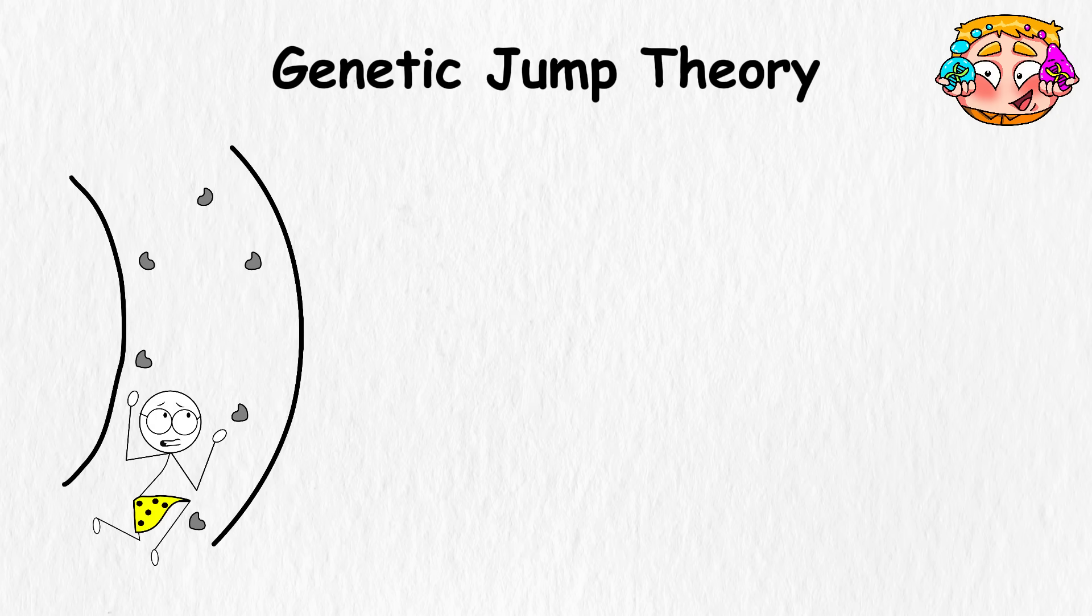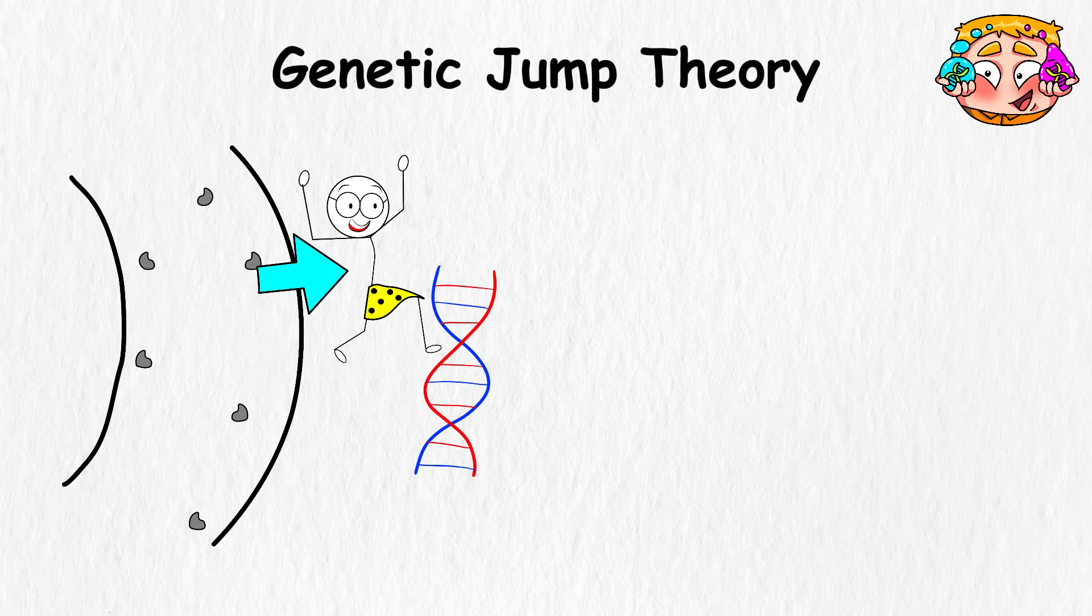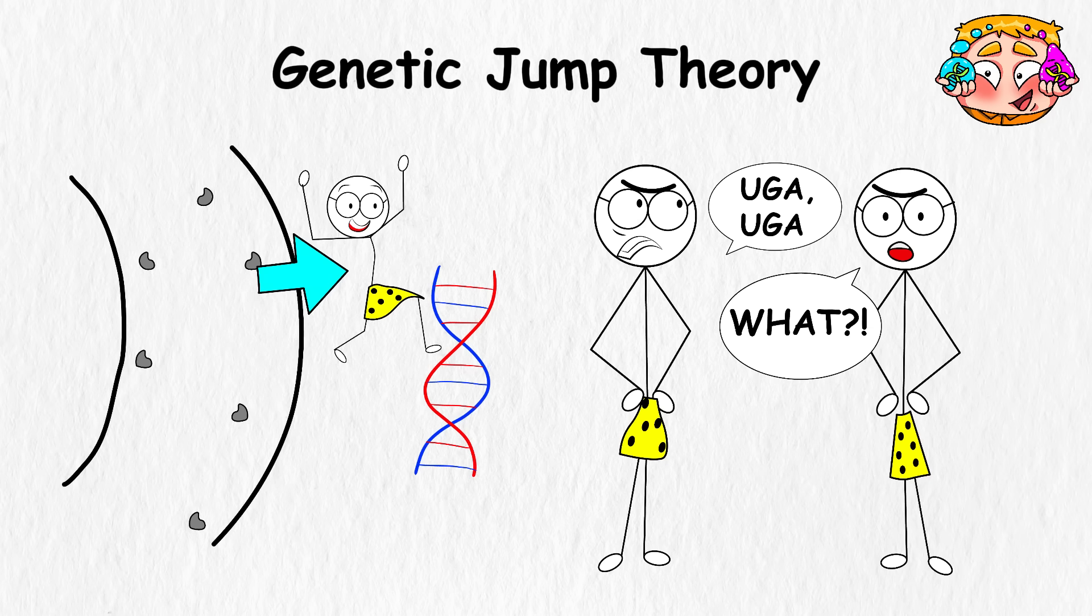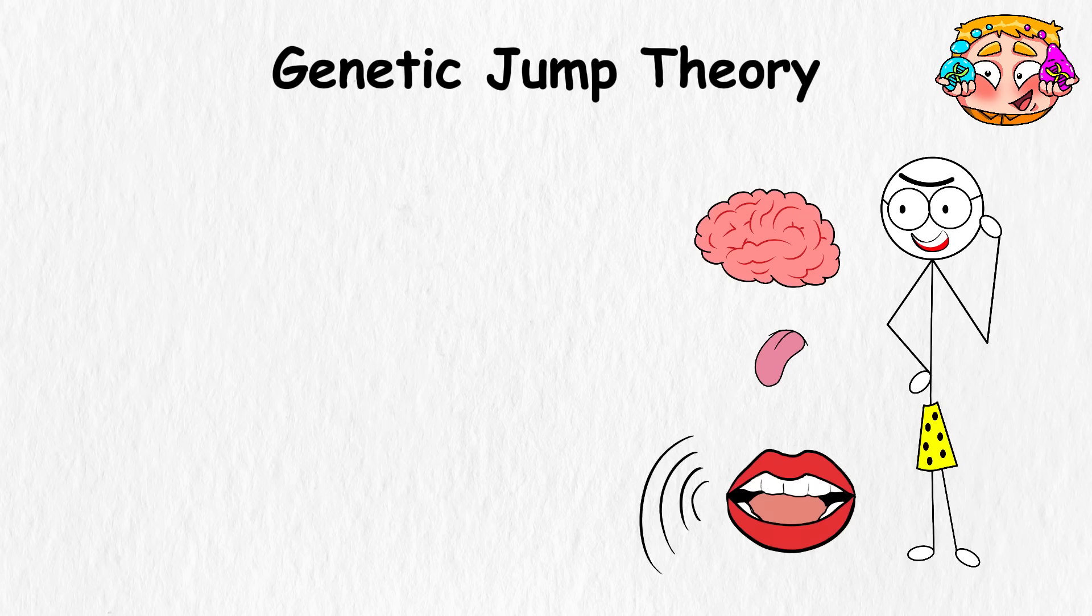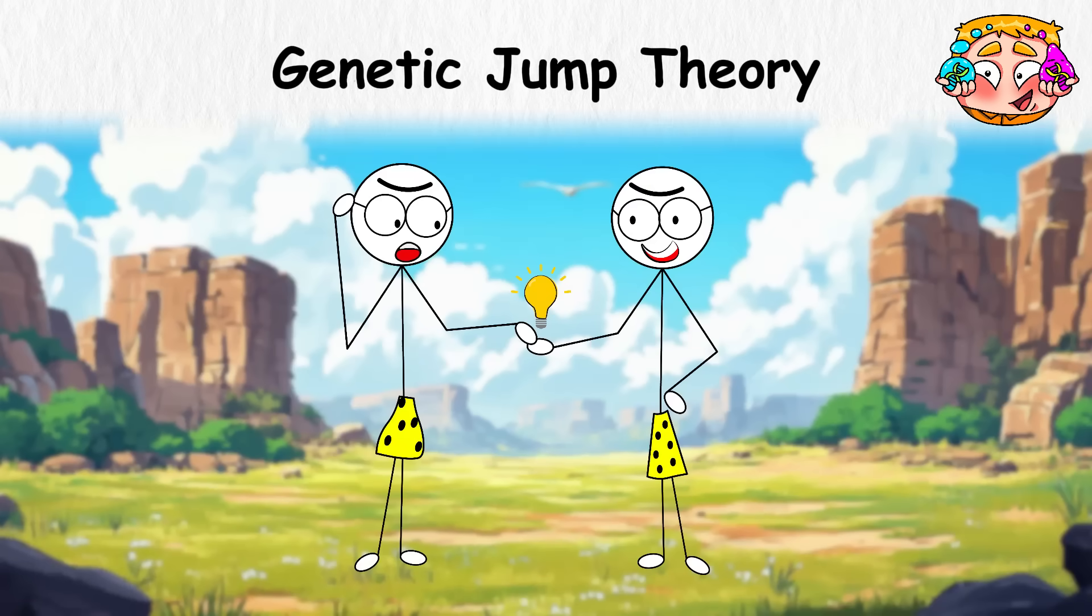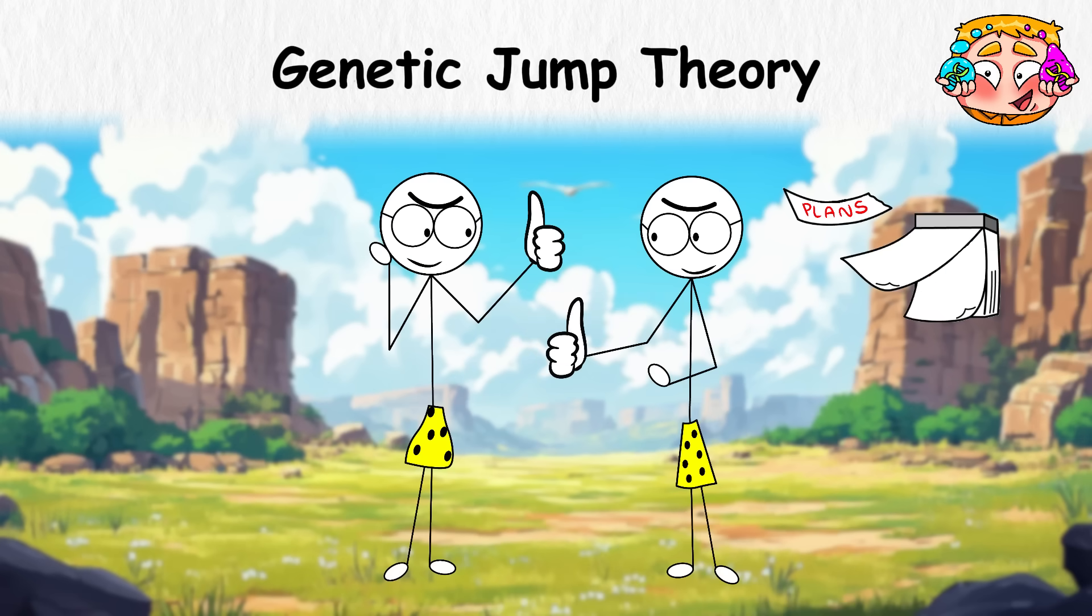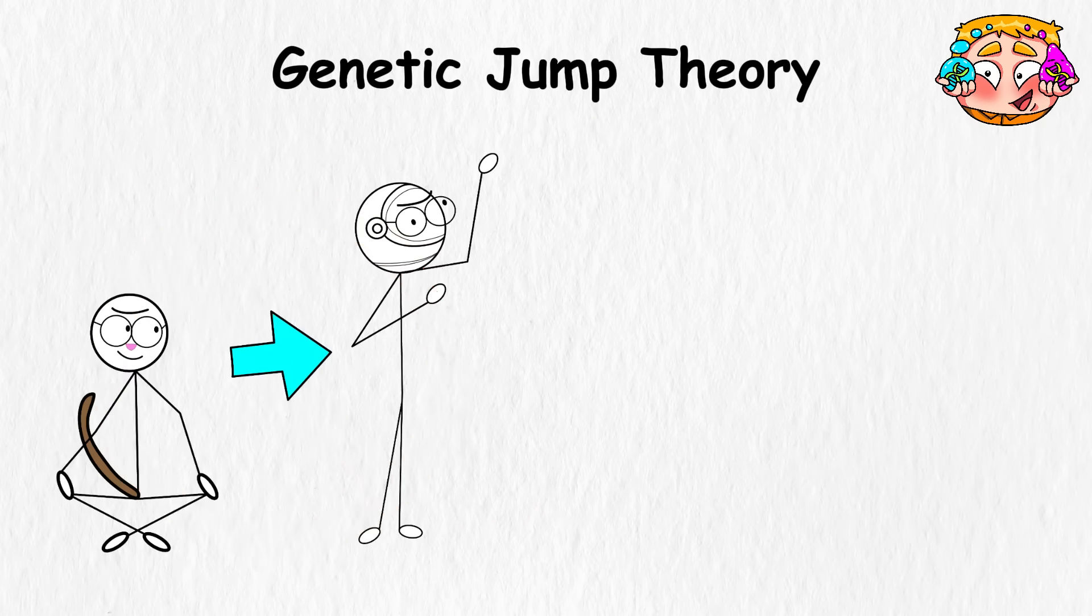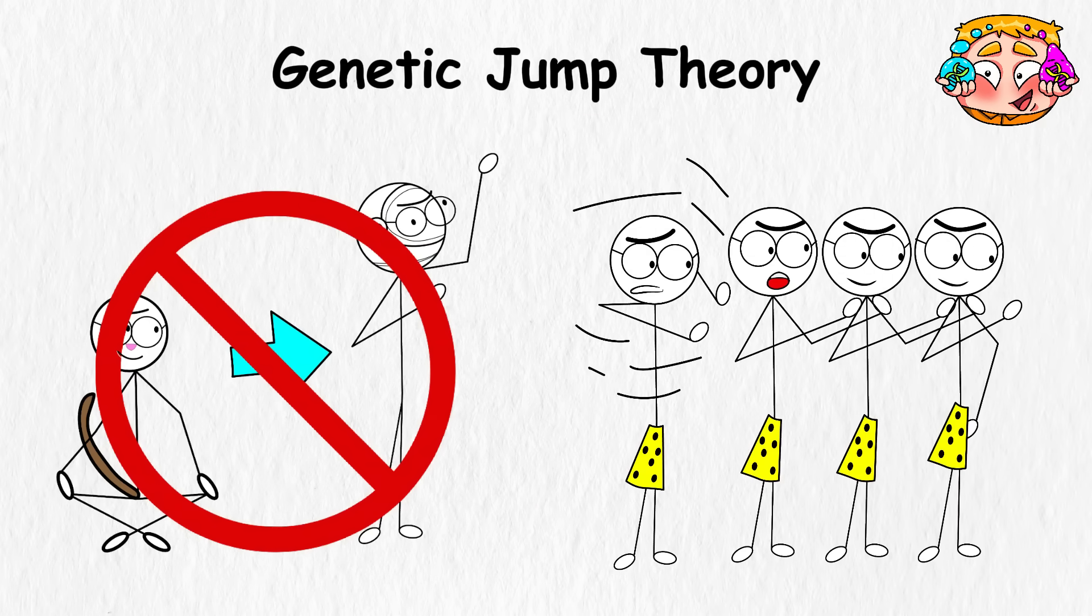Genetic Jump Theory. Instead of crawling forward forever, early humans may have taken a shortcut thanks to one tiny shift in their DNA. The kind of change that feels small until someone starts inventing language, tools, and drama. One gene often brought up is FOXP2. It helps with language, and a small mutation in it may have helped early humans do something new. Speak clearly, pass down ideas, and think together. Not just pointing or shouting, but actual conversations, plans, warnings, even stories. This kind of change wouldn't turn apes into astronauts overnight, but it could have been just enough to push one group ahead.